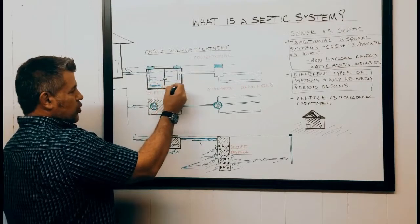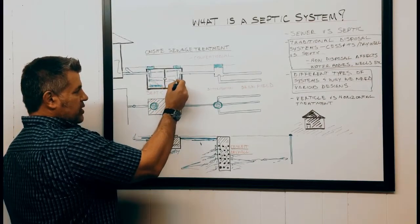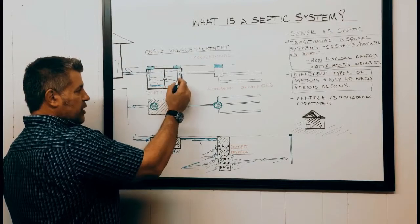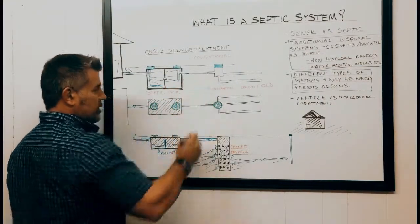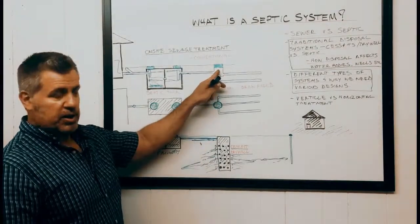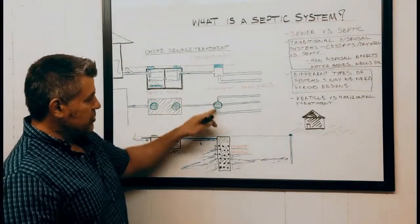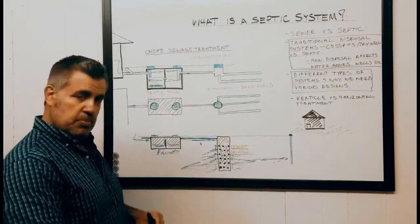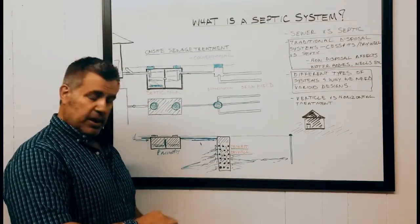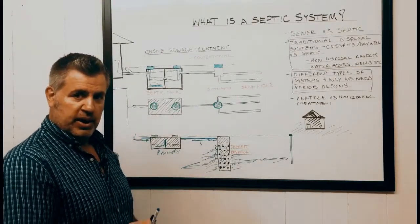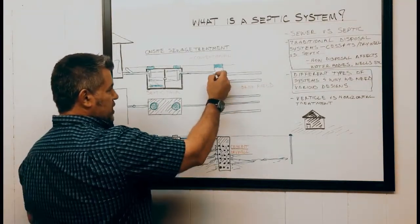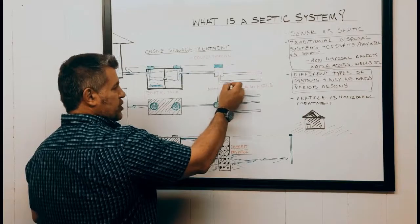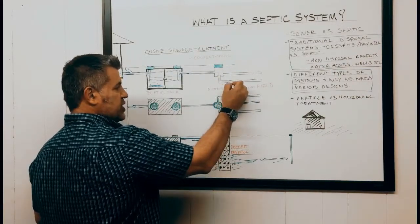This area here is the clear zone, and that would be the effluent that would then travel through that baffle in the septic tank and make its way out into what's called the distribution box. This distribution box is responsible for evenly separating that effluent into different channels of our drain field.